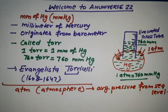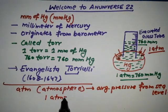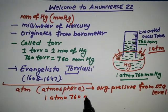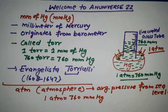The conversion is: one ATM equals 760 mm of mercury. It is the most common unit of average pressure that is generally used.